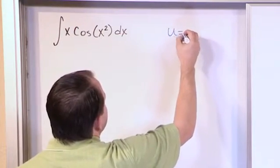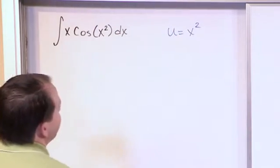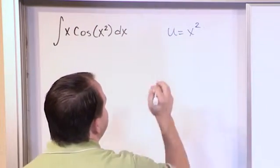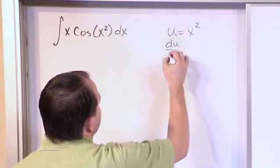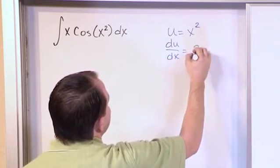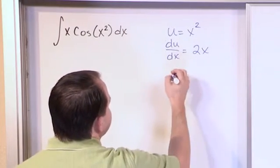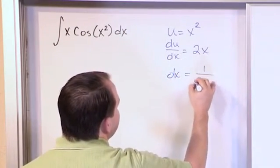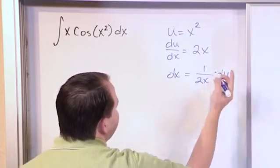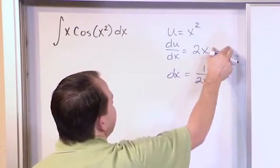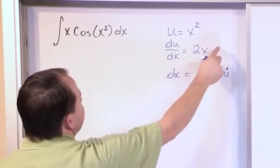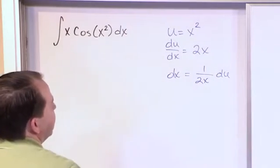So what I want to do is set u equal to x squared. The reason I want to do that is because du with respect to x is 2x. We just said that, taking that derivative. And then if I solve this stuff for dx, what I'm going to get is 1 over 2x du. Make sure you understand that. Just move the dx over here and then move the 2x over here. So solving for dx is 1 over 2x du.